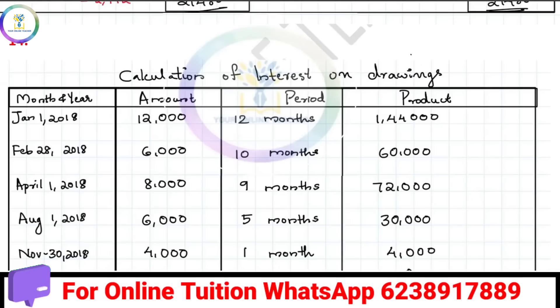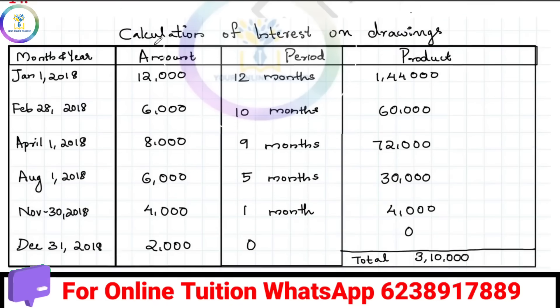We have 4 columns. The first two columns share the same column for the amount. The 3rd column is the period and the 4th column is the product. Now let's see how we fill the period column.